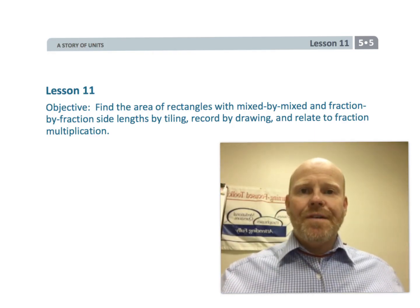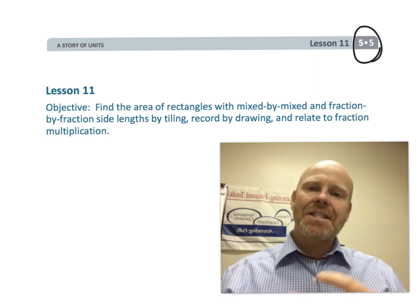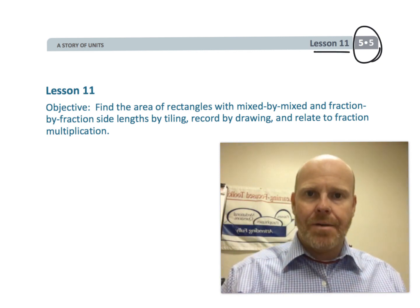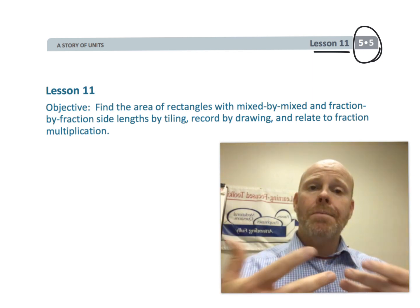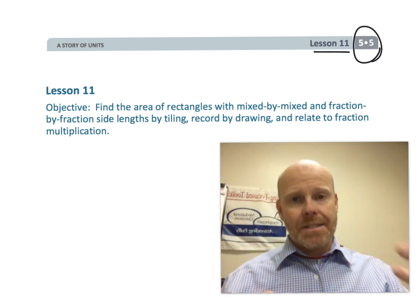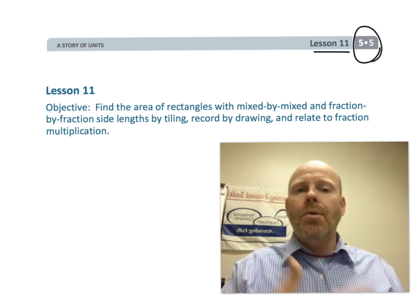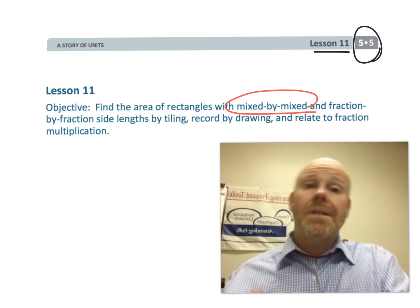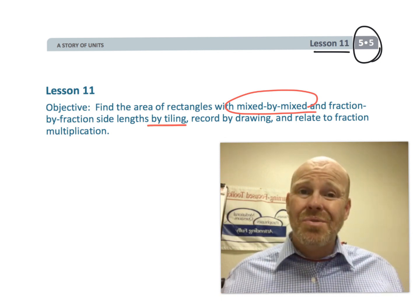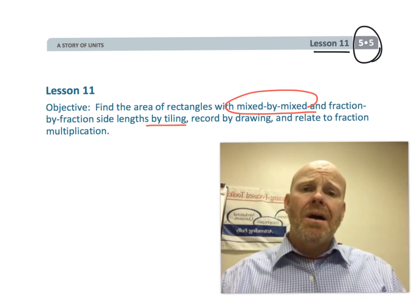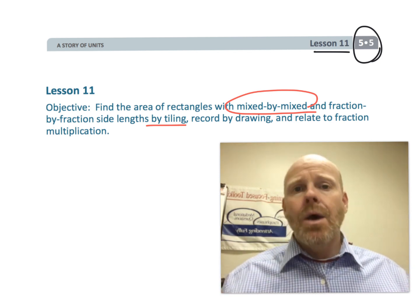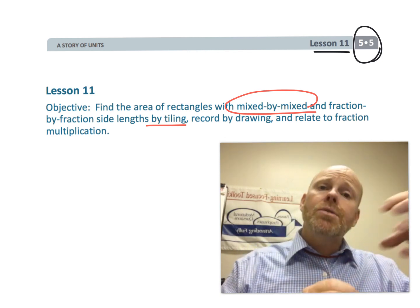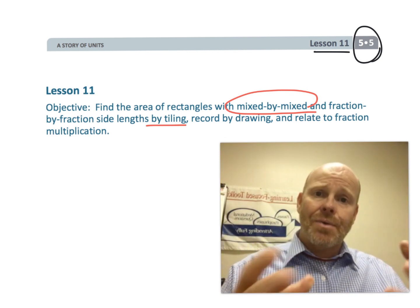This is fifth grade, module 5, lesson 11. In this lesson we're still using tiling and the area model, but this time we are going to be multiplying mixed numbers by mixed numbers. This is really where it's important that we use the tiling method rather than repeated addition, because you can't do that easily when both numbers are mixed numbers. This is another step closer towards the standard algorithm, so let's get started.